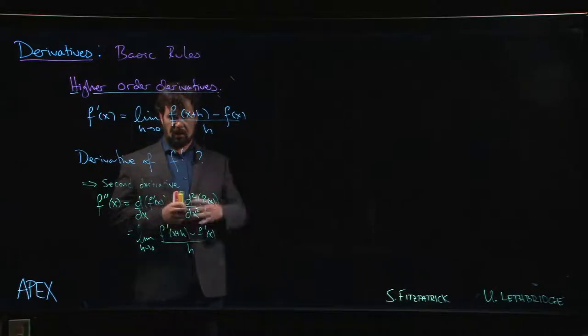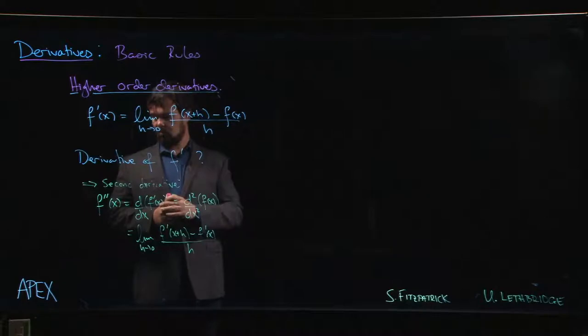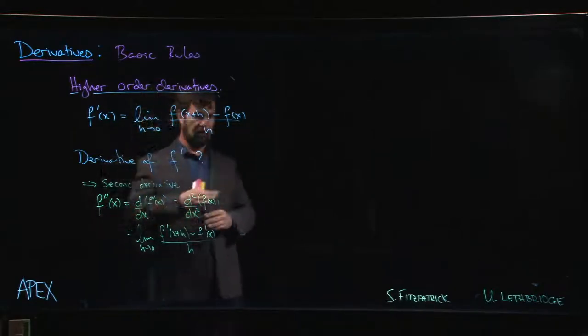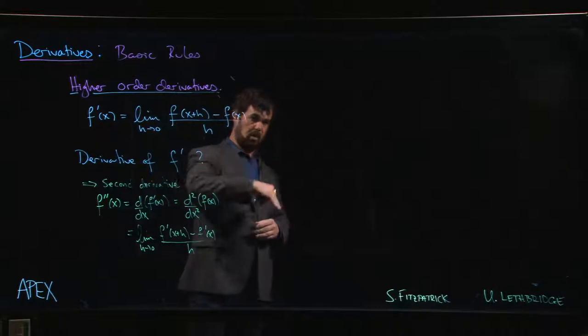The second derivative tells us something about curvature. We're going to see that in the next chapter once we get into the graphical behavior of functions. We'll see that the second derivative sort of tells us how a function deviates from being linear—how does the graph deviate from being a straight line? Does it curve up away from a line, is it curved down away from a line?